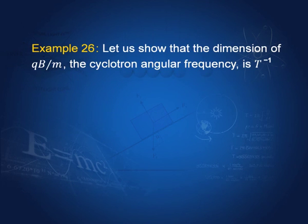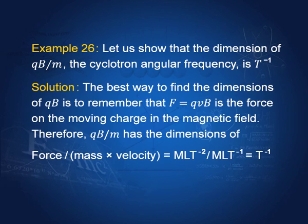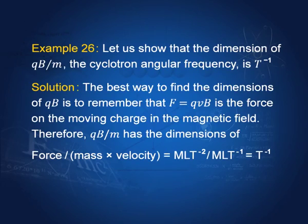In the last lecture, we found the quantity q B / m, which is the cyclotron angular frequency. Its dimension must be T^-1, i.e., a frequency. To show that q B / m has dimensions T^-1: since F = q v B, we have q B = F / v, so q B / m = F / (m v). Force is M L T^-2, mass is M, velocity is L T^-1. Combining these gives T^-1. So it is easy to show that the cyclotron angular frequency q B / m has dimensions T^-1.